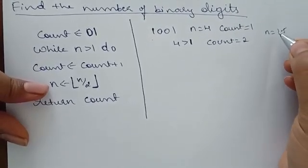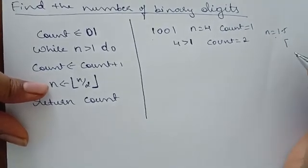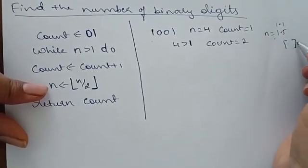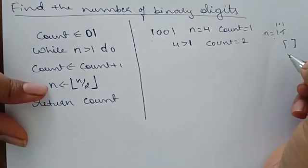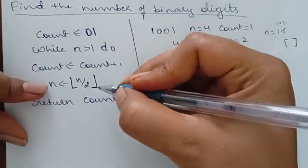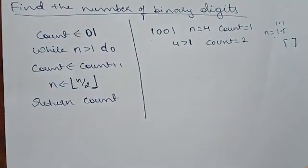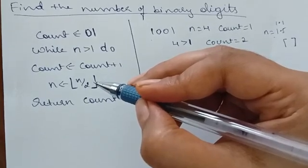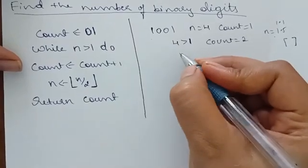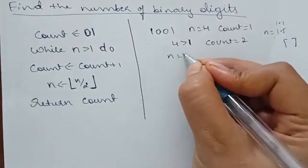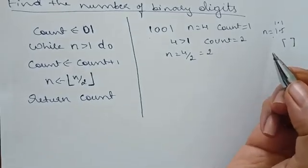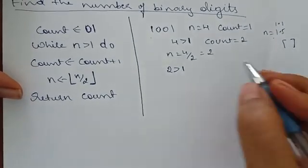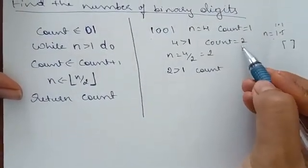The flooring function rounds down: if the result is 1.1 or 1.5 or 1.9, it becomes 1. The ceiling function rounds up: 1.1 through 1.9 all become 2. We use the flooring function here. Continuing: n = 2, loop condition 2 > 1 is true, count becomes 3, then n = floor(2/2) = 1.